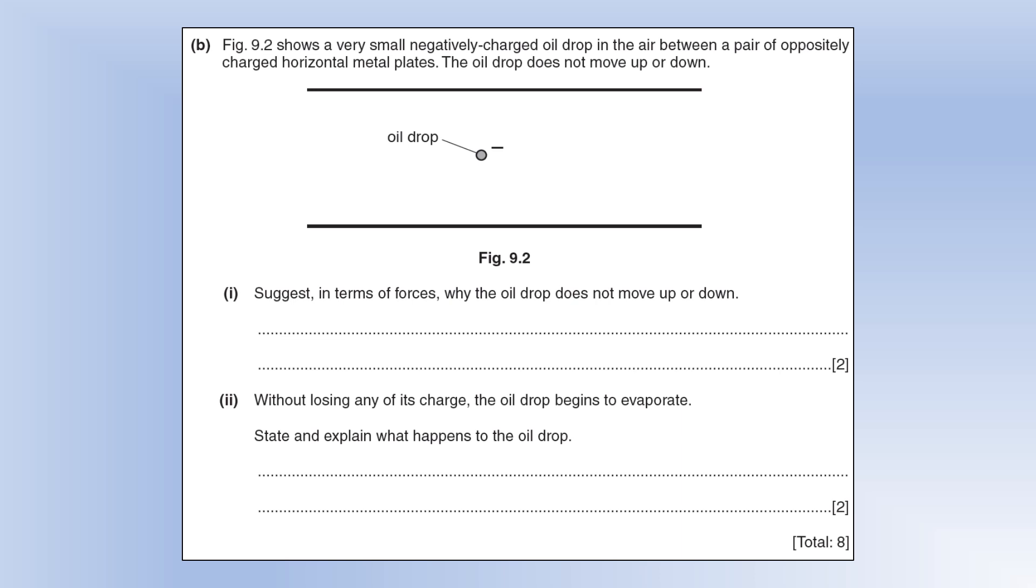The diagram shows a very small negatively charged oil drop in the air between a pair of oppositely charged horizontal metal plates. The oil drop does not move up or down, so it's stationary and it stays stationary. Suggest in terms of forces why the oil drop does not move up or down. It must mean there's an upward electric force equal to the downwards weight force. The resultant force is zero, so if it's stationary originally, it will stay stationary.